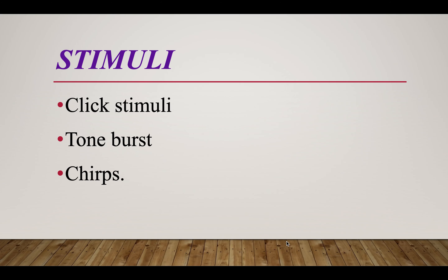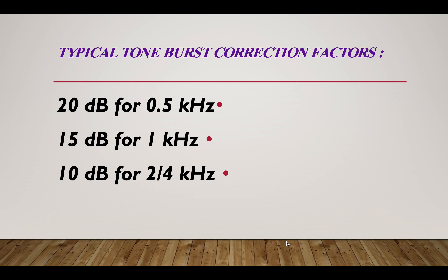The stimuli used are clicks and tone pairs. Click ABR is the standard procedure but covers a frequency range of 2 to 4 kilohertz, and thus masks low and high frequencies. Tone pip ABR is a frequency-specific ABR. The typical tone pip correction factors are 20 dB for 500 Hz, 15 dB for 1 kHz, and 10 dB for 2 and 4 kHz.